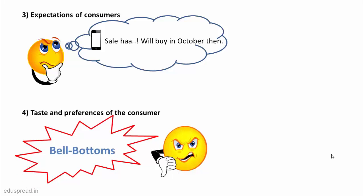Taste and preferences are also an important demand shifter. As fashion changes, demand for old-fashioned goods declines sharply even if the price remains the same — for instance, bell bottoms were popular once but are rarely worn today. Another example is climate: demand for ice cream increases in summers, even at the same price. Many other factors influence taste and preferences, such as advertisements and new inventions.